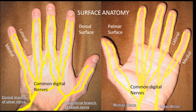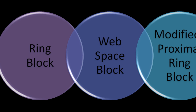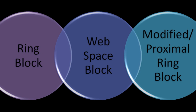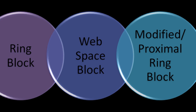The common digital nerves arise from the ulnar, median, and radial nerves. These divide at about the mid-palmar level to produce a medial nerve of one finger and a lateral nerve of the other. There are various ways to perform a complete digital block, each with their own pros and cons. We will be covering the classical 4-sided ring block, the web space block, and the modified ring block.